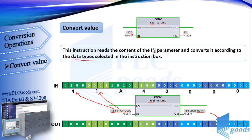So when you're using the Convert instruction, take care of data types because you may lose part of your data. For example, suppose you're converting a Double Integer to Integer type. The Integer format supports numbers from -32,768 to 32,767, so if you want to convert a number like 40,000, which is out of this range, it won't work correctly.